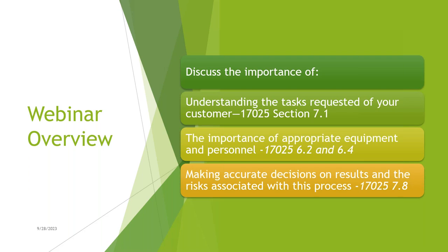Some of the points he's going to be talking about is really understanding the tasks requested of your customer — that is a requirement in ISO 17025 Section 7.1. We're also going to be talking about the importance of appropriate equipment and your personnel: is the equipment suitable for the tasks you're being asked by your customer? Is it calibrated? Is your personnel appropriately trained on this specific task? And in relation to 17025 Section 7.8, you'll be talking about making accurate decisions on results and the risks associated with this particular process.